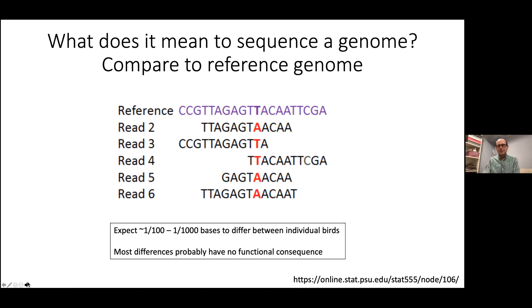In general, if you compare the genomes of two birds, depending on the species you might see anywhere from one in a hundred to one in a thousand bases that differ between those two individuals. It's a low percentage, and most of these differences typically don't have any functional consequence. One of the big tricks is figuring out which differences in the genome between individuals really have some phenotypic effect.